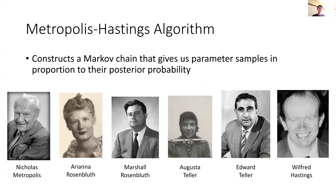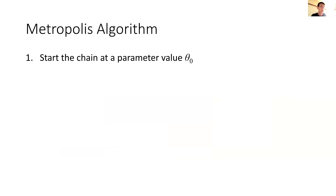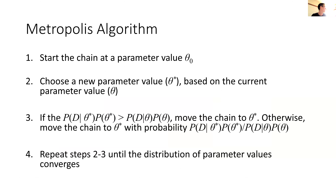The most popular MCMC algorithm today is the Metropolis-Hastings algorithm, which constructs a Markov chain giving parameter samples that match the posterior distribution. The algorithm is named after Nicholas Metropolis, the first author of the paper where it was first described, though there is some controversy over who deserves credit for its development. In the interest of time, I'll skip the slide on implementation details of the Metropolis algorithm — those will be posted online — and move to R code showing how we can implement MCMC sampling for our transmission model.